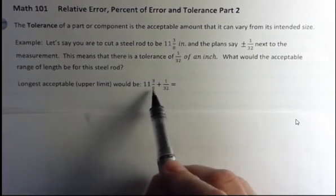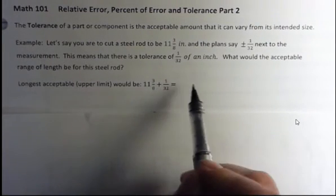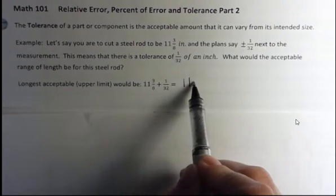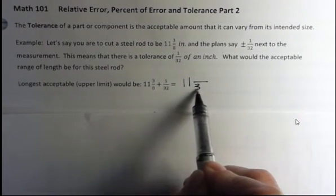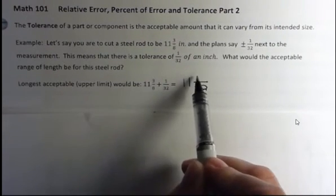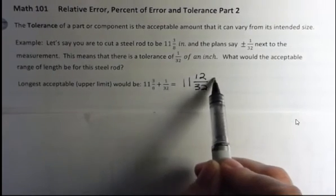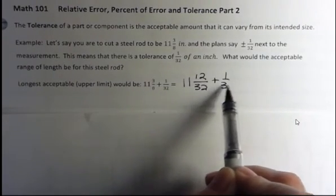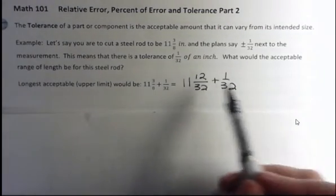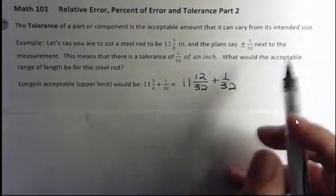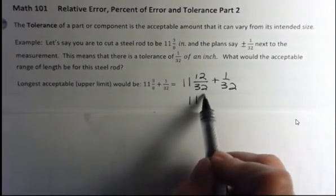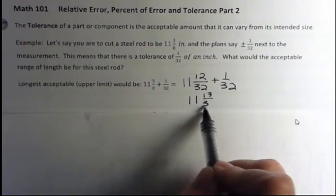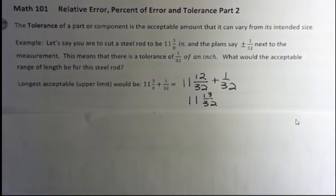11 and ⅜, well, I know that 8 goes into 32 four times, so I'm going to multiply the denominator by 4 and get 32, and then the numerator by 4 and get 12, and then I can add that 1/32nd onto that very easily. 12 plus 1 makes 13, so the upper limit is 11 and 13/32nds. That's the upper limit that would be acceptable with the tolerance of 1/32nd.